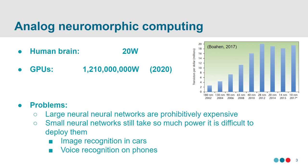Why are we interested in analog neuromorphic computing? Neural networks are a big thing, but they use a lot of power. The human brain takes about 20 watts. If I wanted to make a neural network about the size of the human brain running on GPUs, I would estimate that to require something like one and a bit gigawatts of power. That is a lot more power — there's a big scale difference between these numbers.